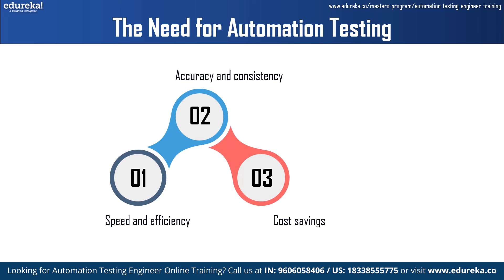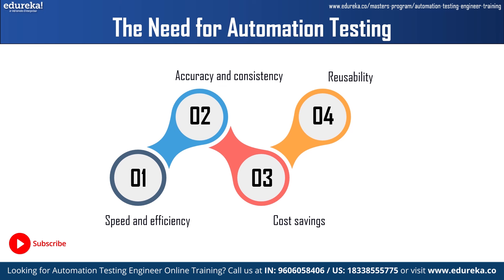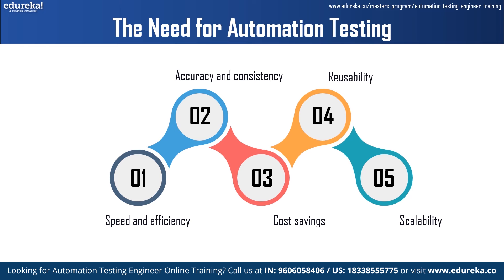Next is cost saving. Automation testing can save money in the long run because it eliminates the need for manual testing and frees up QA resources to focus on other tasks, leading to cost savings and higher returns on investment. Next is reusability: automated tests can be reused across various versions of software applications or multiple projects. And the last benefit is scalability — large and complex software applications with multiple test cases, data inputs and configurations can be easily tested using automation testing, making it an excellent choice for applications that are frequently updated or require continuous testing.